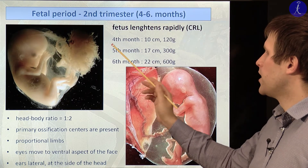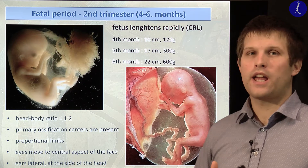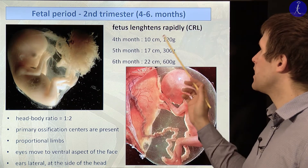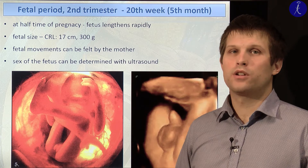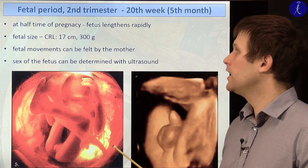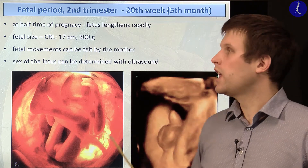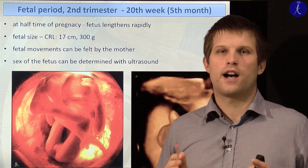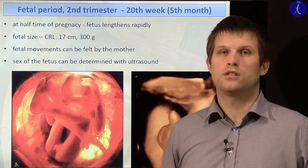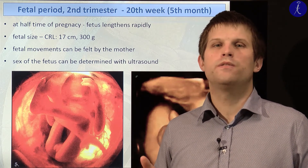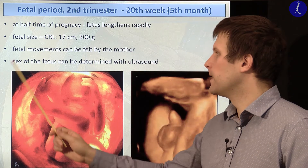Following the fourth, fifth, and sixth months, the baby will more likely elongate rather than accumulating and gaining body weight. The 20th week is important — this is approximately the halfway point of pregnancy. At that time the fetus size is approximately 17 centimeters and just 300 grams. At that time, pregnant ladies can feel the movements of the fetus, though these movements may be felt a bit earlier or later depending on the individual.